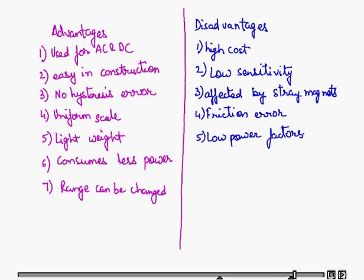The advantages of this system: it can measure AC as well as DC, it is easy to construct, no hysteresis error, uniform scale, lightweight, consumes less power, range can be changed easily.